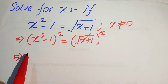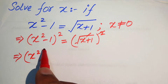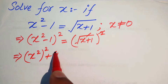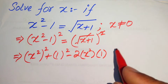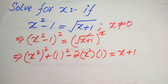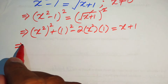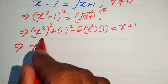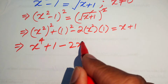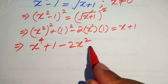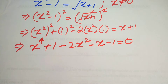We use the square identity: (x² - 1)² expands as x² whole squared plus 1 squared minus 2 times x squared times 1, equals x plus 1. Further simplification gives x to the power of 4 plus 1 minus 2x squared. Moving the remaining terms to the left hand side gives minus x minus 1 equals 0.